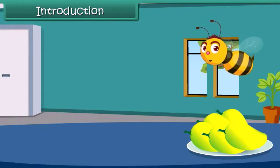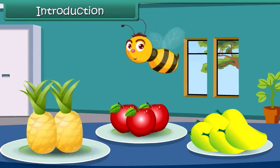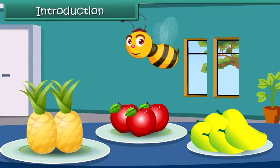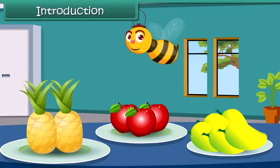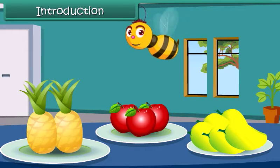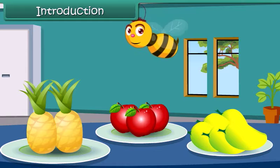Hello friends, here you see some fruits are kept on the table. We have 5 mangoes, 3 apples and 2 pineapples. Describing in this manner is called data representation.